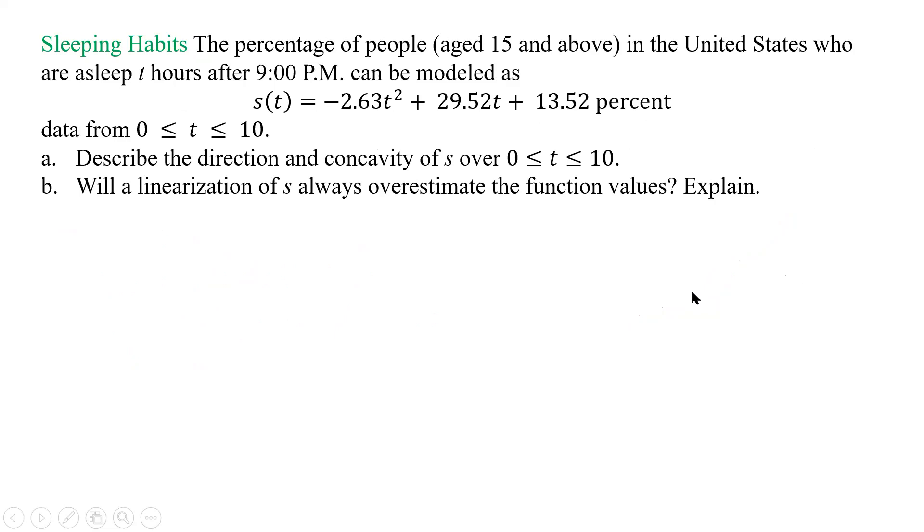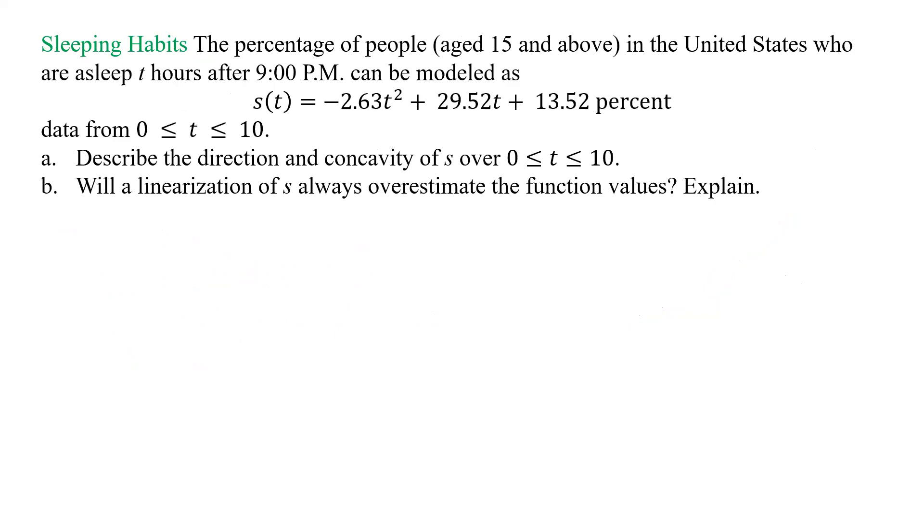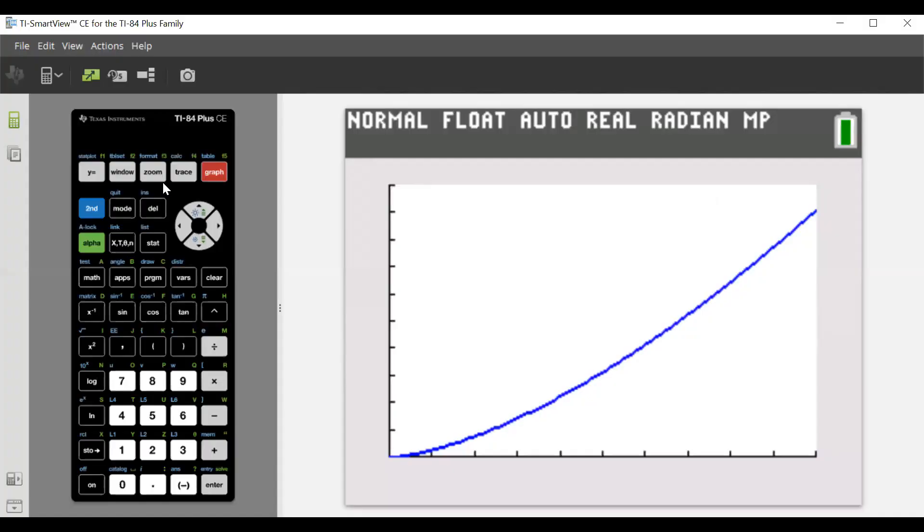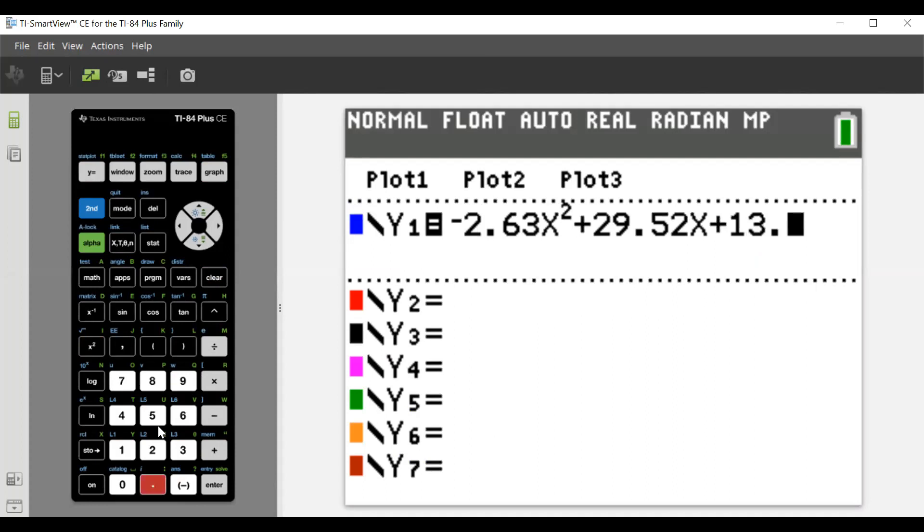All right. What about this one? So this one, we're going to have to do the same thing. We're going to have to go and draw that in and see what it looks like. So this one, I didn't actually go ahead and plug in. So we'll go over here, and we'll type it in. So we have our negative 2.63x squared, and then plus 29.52, that's x, and plus 13.52.